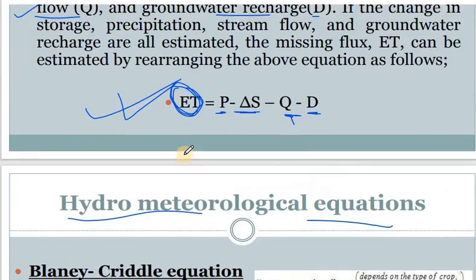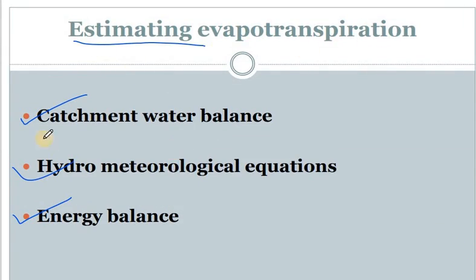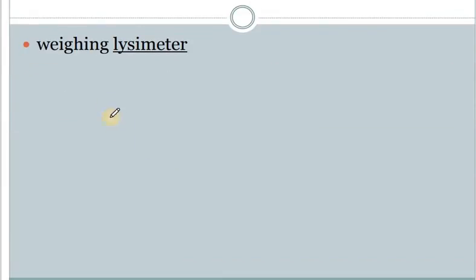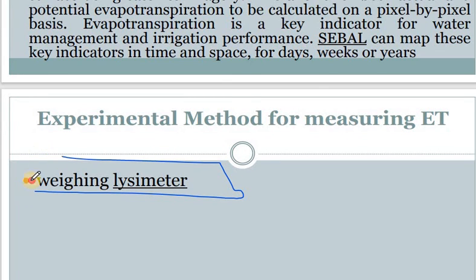So these are the three methods used to find out evapotranspiration: catchment water balance, hydrometeorological equations, and energy balance. Evapotranspiration is also measured with an instrument called a lysimeter. This is all about evapotranspiration. We have left with small numerical problems related to evaporation, which we will see in the next class. Thank you.